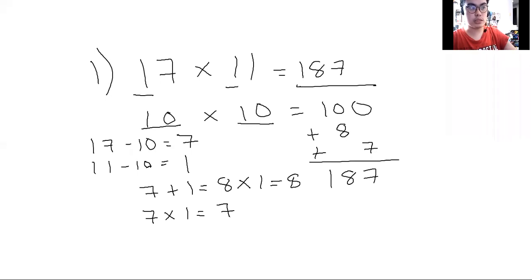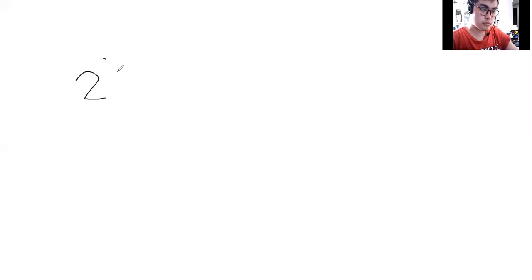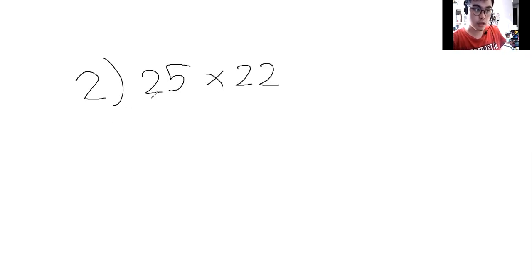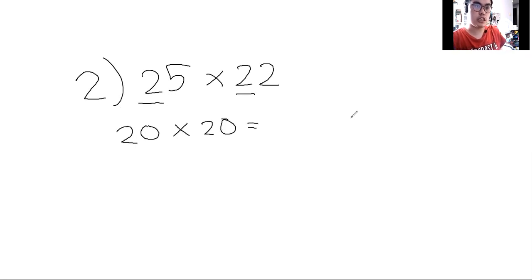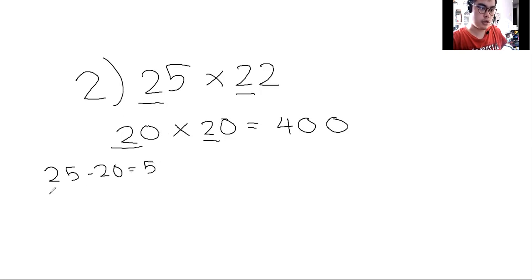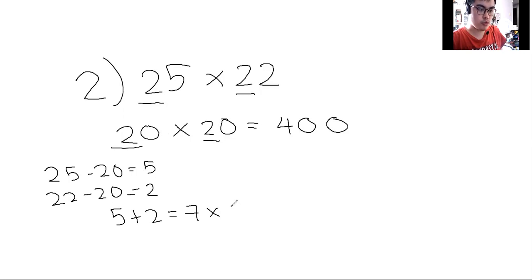Now we're going to proceed to the example involving 20s. So 25 times 22. Again, our first step is to identify the tens digit, which is 2. So we write 20 times 20 for the hundreds digit — 2 times 2 is 4, then we add two zeros right away. Next, 25 minus 20 is 5, and 22 minus 20 is 2. We add 5 and 2, which is 7, then multiply by 2, which is 14. We place 14 in the tens digits.